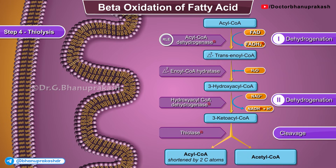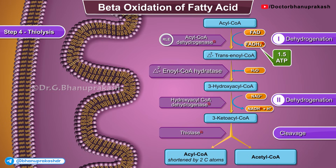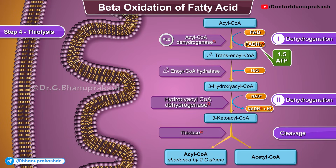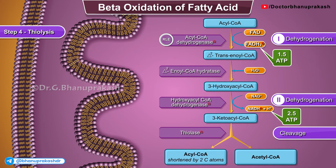In summary: Oxidation uses acyl-CoA dehydrogenase, producing 1 FADH2, which equals 1.5 ATP. Hydration uses enoyl-CoA hydratase, with no reducing equivalents produced. Oxidation uses hydroxyacyl-CoA dehydrogenase, producing 1 NADH, which equals 2.5 ATP. Cleavage uses thiolase, with no reducing equivalents produced.